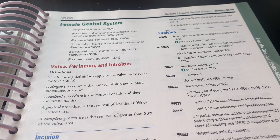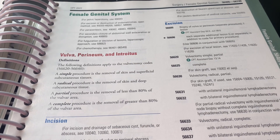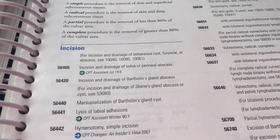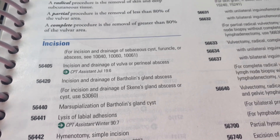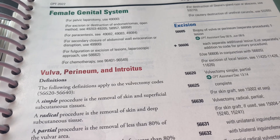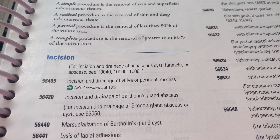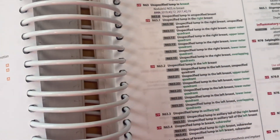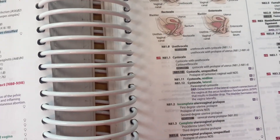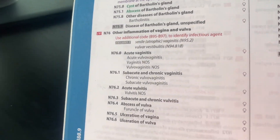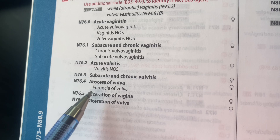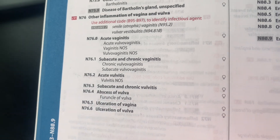Next up I have an office procedure where the patient came in because she had a vulva abscess and we did an I&D, so I'm going to use 56405, which is right underneath the vulva, perineum, and introitus section. We are going with 56405 because this was a vulva abscess, and my diagnosis code is N76.4. You can see right here: abscess of vulva.